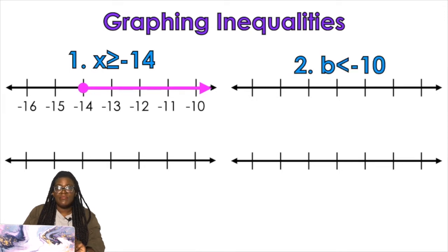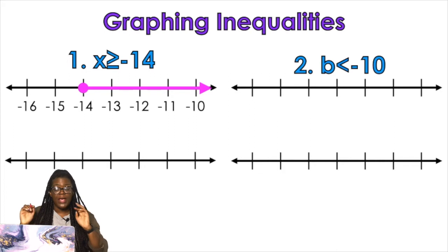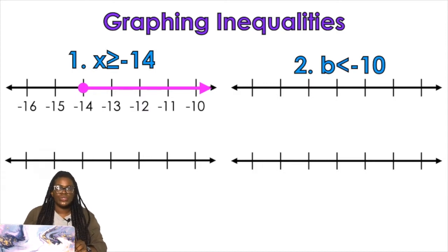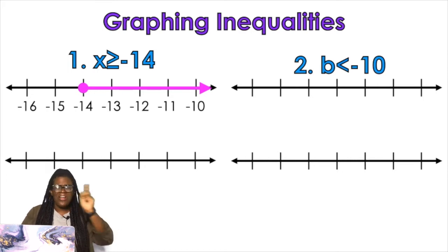Let's say we have b is less than negative 10. Pause and think — what kind of circle should we use for less than? Should it be an open circle or a closed circle? If you said open, you're correct.